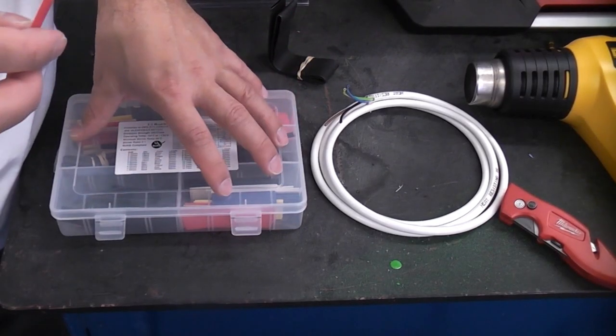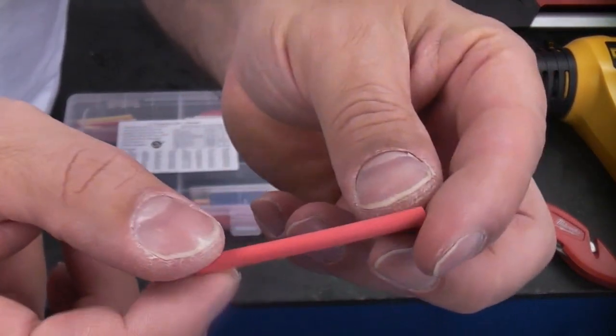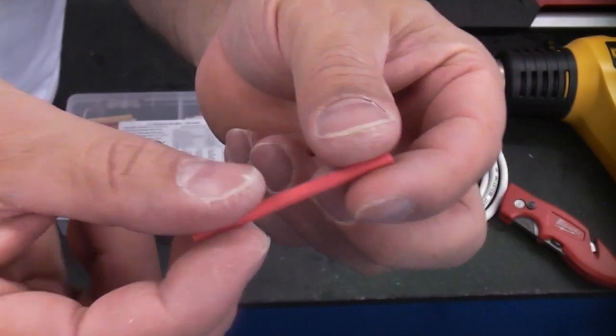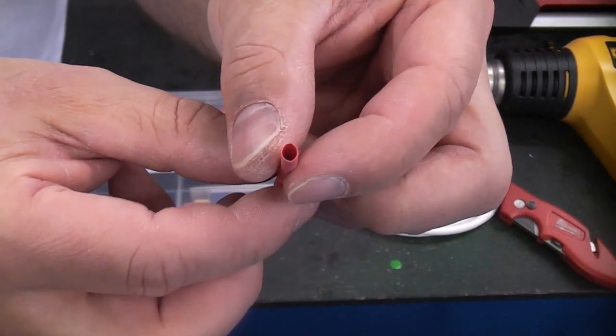Heat shrink sleeving is very useful. You may have seen me using this in the past. You can use this for repairing damaged wires. You can solder the wires together and then repair the insulation using the heat shrink sleeving.